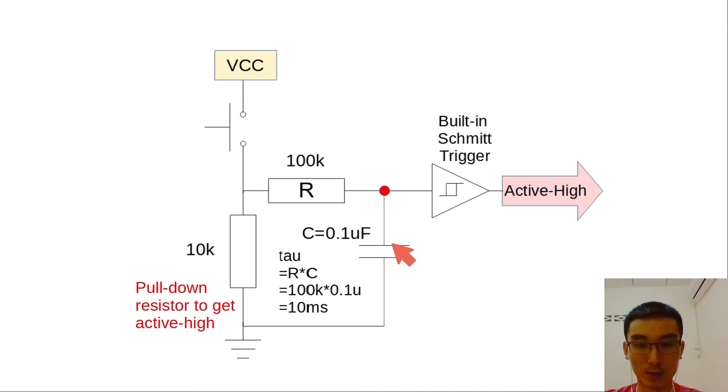By introducing the capacitor we are causing the output voltage, this output voltage here, to be any value between logic zero to logic one. In digital circuits we don't want to have any value in between zero or one.